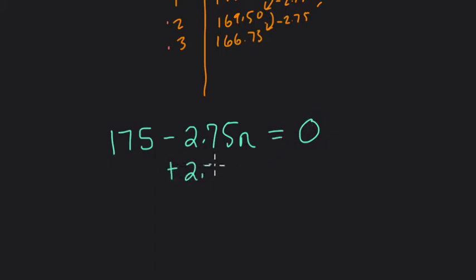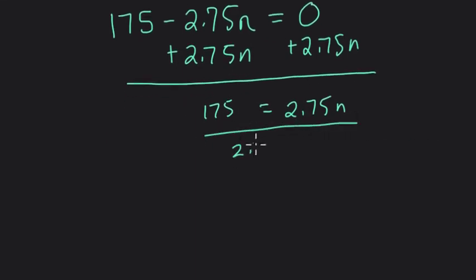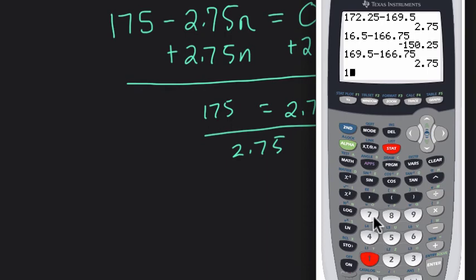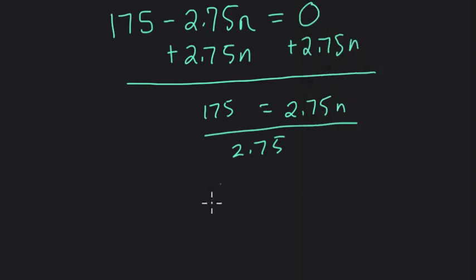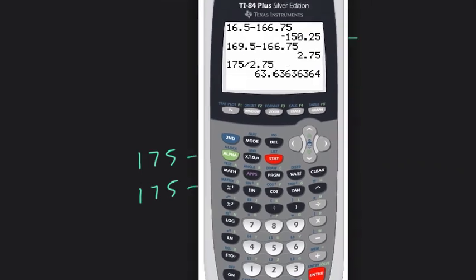So I would add $2.75n to both sides. That's the way I would start this. Then we have $2.75n equals $175. And we divide both sides by $2.75. So what is $175 divided by $2.75? So $63.63 repeating equals n. So what does that mean? Well, if n is $63, and we can do it, right? $175 minus $2.75 times $63. What happens? And what happens when n is $64? Because we can't have a fraction of a week. Let's just look at these two cases right here.